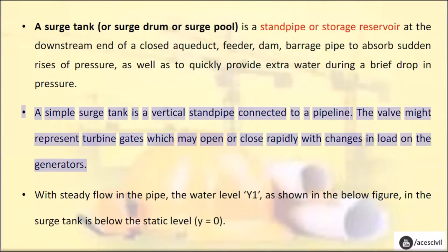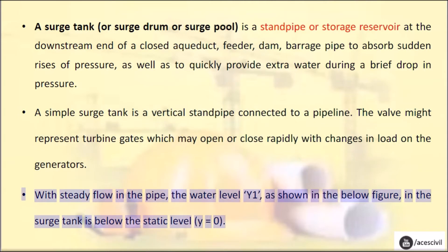A simple Surge Tank is a vertical standpipe connected to a pipeline. The valve might represent turbine gates which may open or close rapidly with changes in load on the generators. With steady flow in the pipe, the water level Y1, as shown in the figure below, in the Surge Tank is below the static level, Y equals zero.